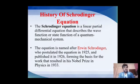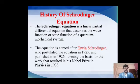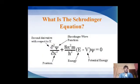The history of the Schrödinger equation: it is a linear partial differential equation consisting of a derivative, and it is generally used in quantum mechanical systems to give the position of a particle. Erwin Schrödinger, the great scientist who discovered this equation in 1925, published it in 1926, and received a Nobel Prize for it in 1933.